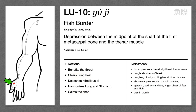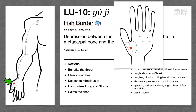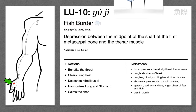As for the name, Yi Ji means fish border, presumably because the thenar eminence looks like the belly of a fish. For Lung 10, remember: clears heat and benefits the throat.